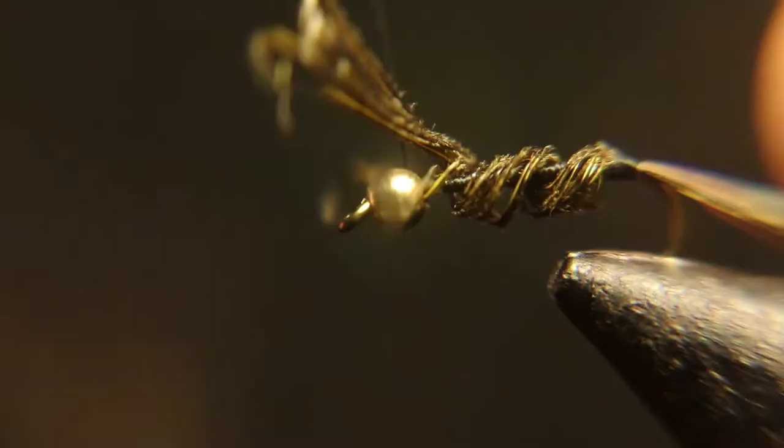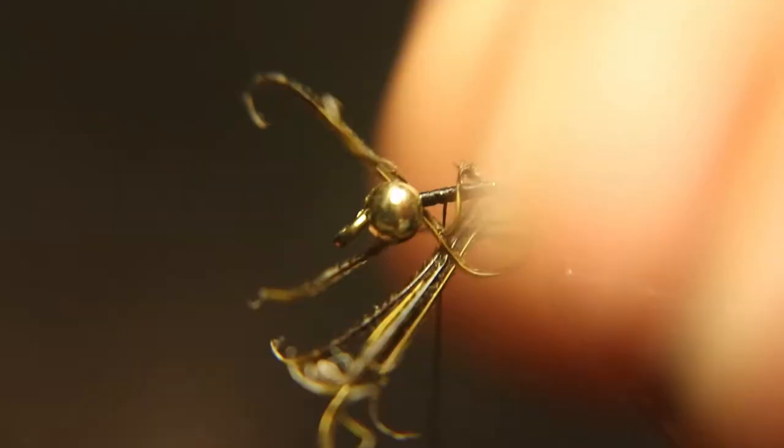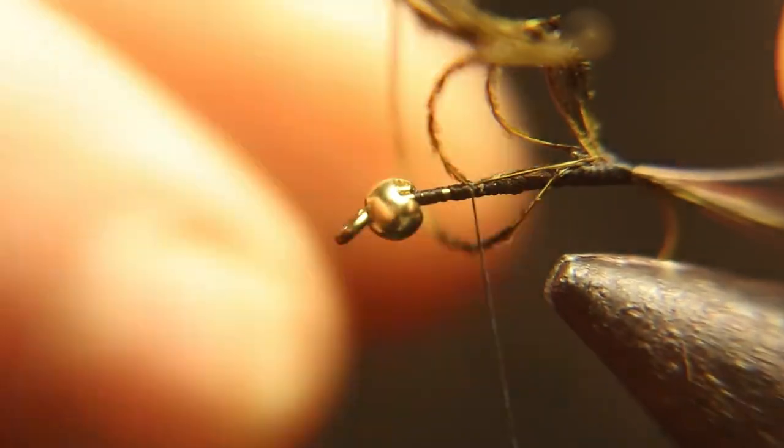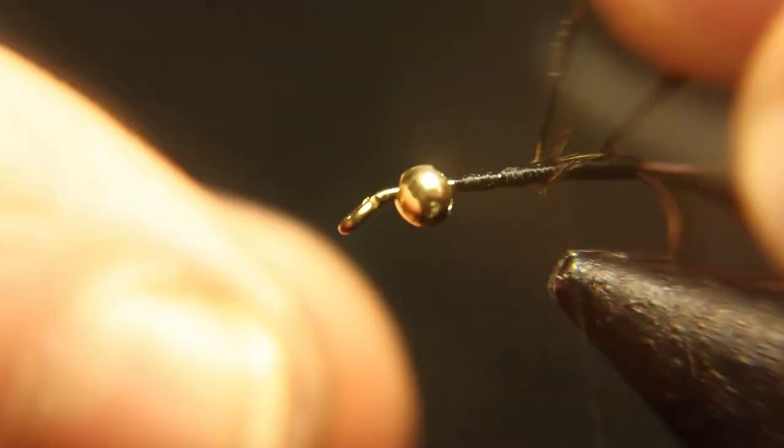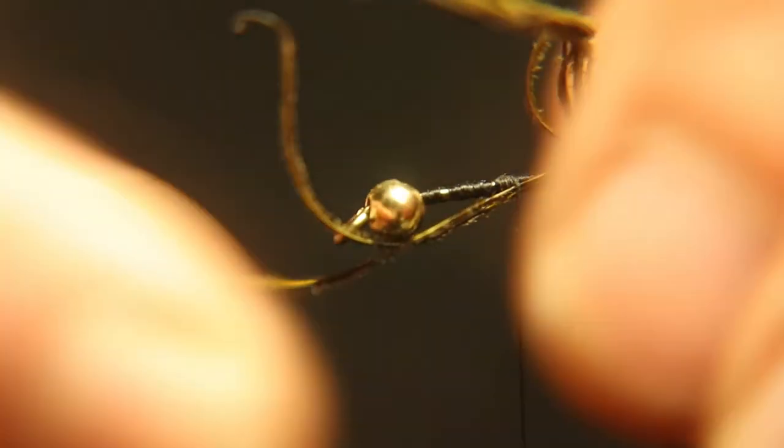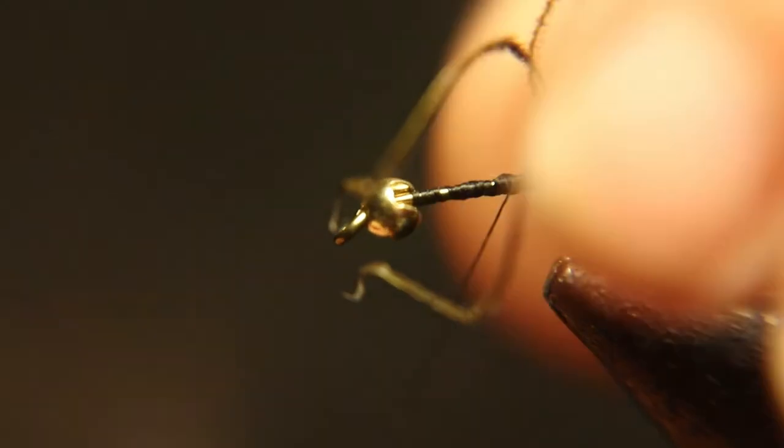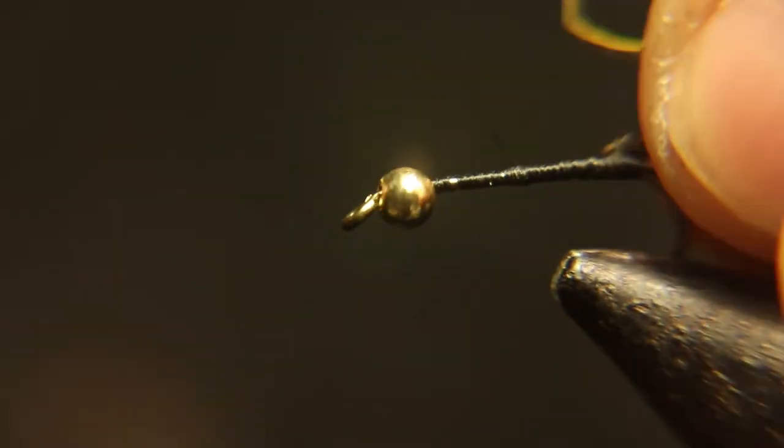Start wrapping that towards the bead, just wrap it around the hook shank. Oh man, what do you mean that got messed up? Must have slipped out of your hands. Well, let's unwind it, clip it off, and I'll show you how to tie on new pheasant tail the easiest, slickest way to do it.